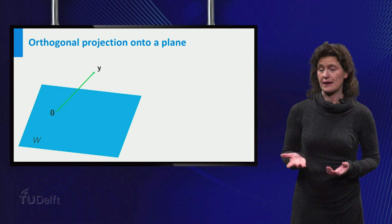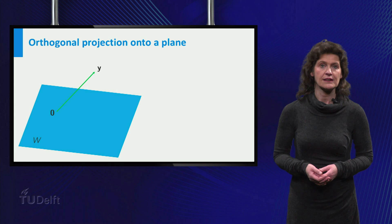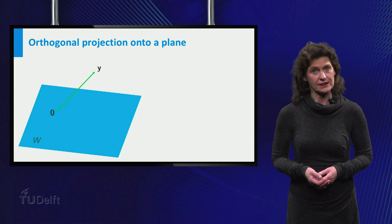Here are the two actors in our game, Y and W. Y is a vector in R3 and W is a plane containing the origin.